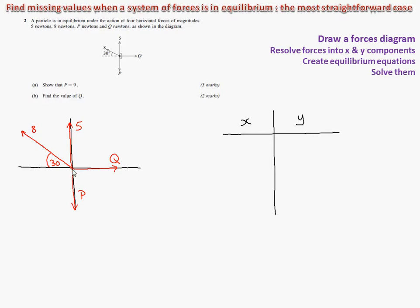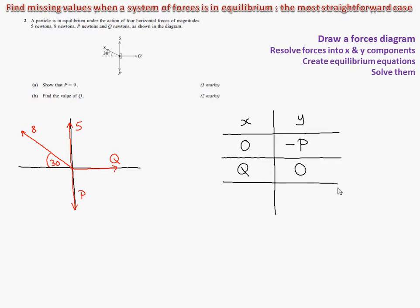I'm going to start with the easier vectors that are not diagonal. This one going downwards with a magnitude of P has no movement in the X direction, and is negative P in the Y direction because it's downwards. The next one is Q units horizontal — that's positive Q in the X direction, nothing in the Y direction. Then the 5 units upwards: 0 in the X direction and plus 5 in the Y direction.